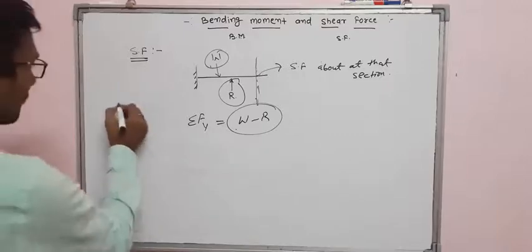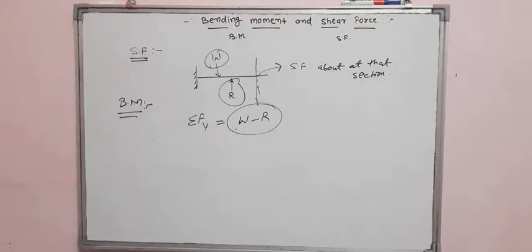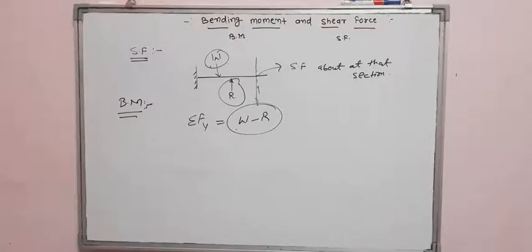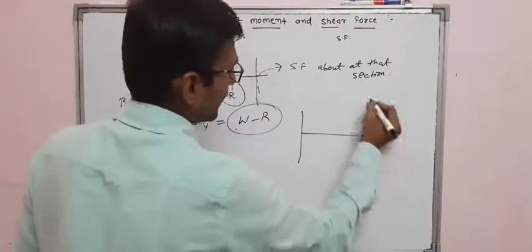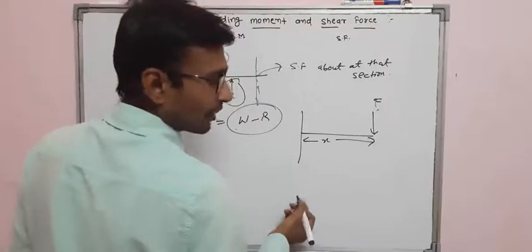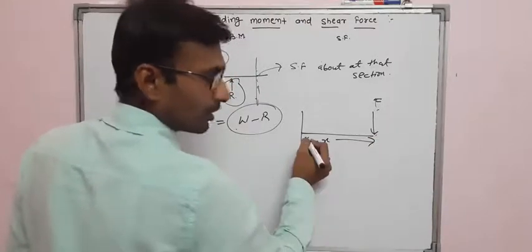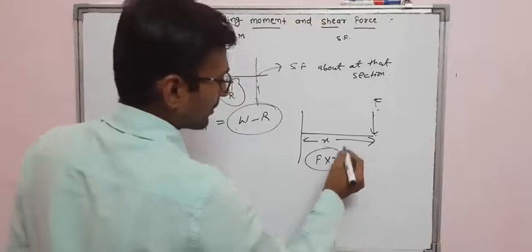Next point: bending moment definition. Bending moment is the moment of all vertical forces about the section. To find the moment, we use: moment = force into perpendicular distance. In numericals, we will calculate: force into perpendicular distance about that point.